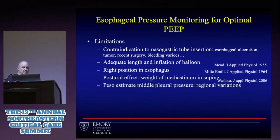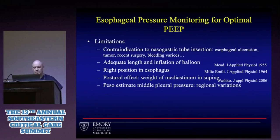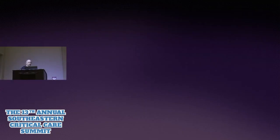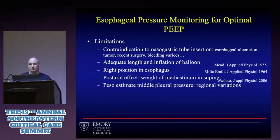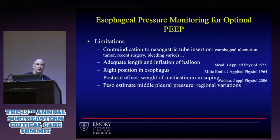There's the postural effect — the weight of the mediastinum applies extra pressure to the esophageal pressure measurement when the patient is supine. Regional pressure variations also matter: with the patient sitting up, the catheter is probably in West lung zone 2. Change patient position and that lung zone may change, and the weight will affect the measurement whether supine or prone.